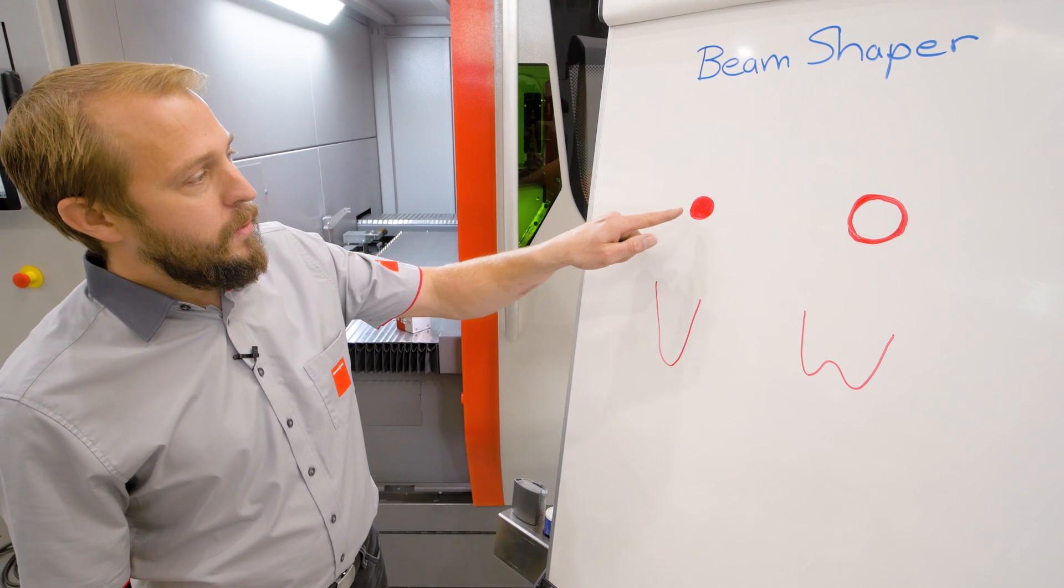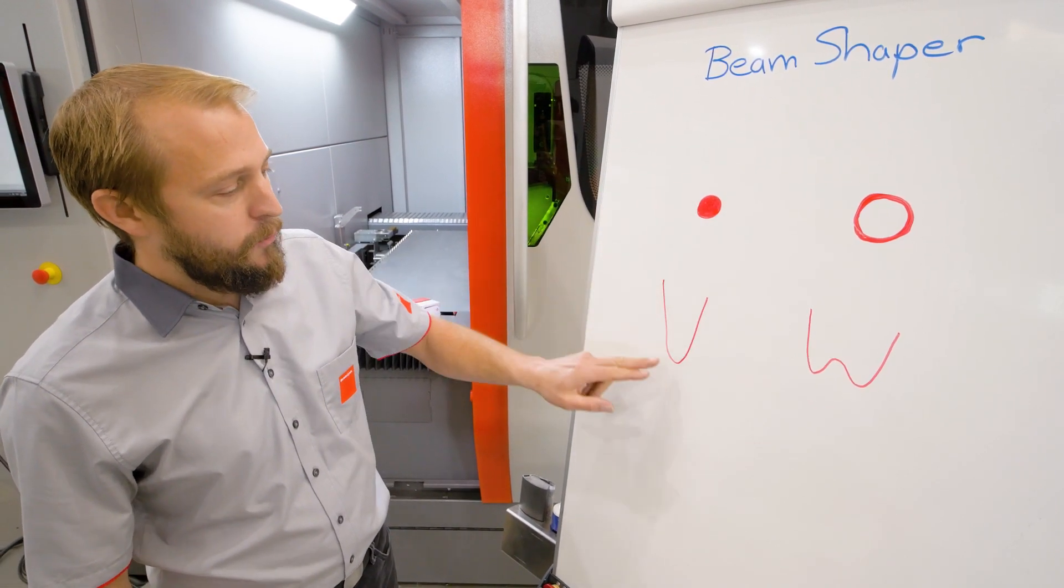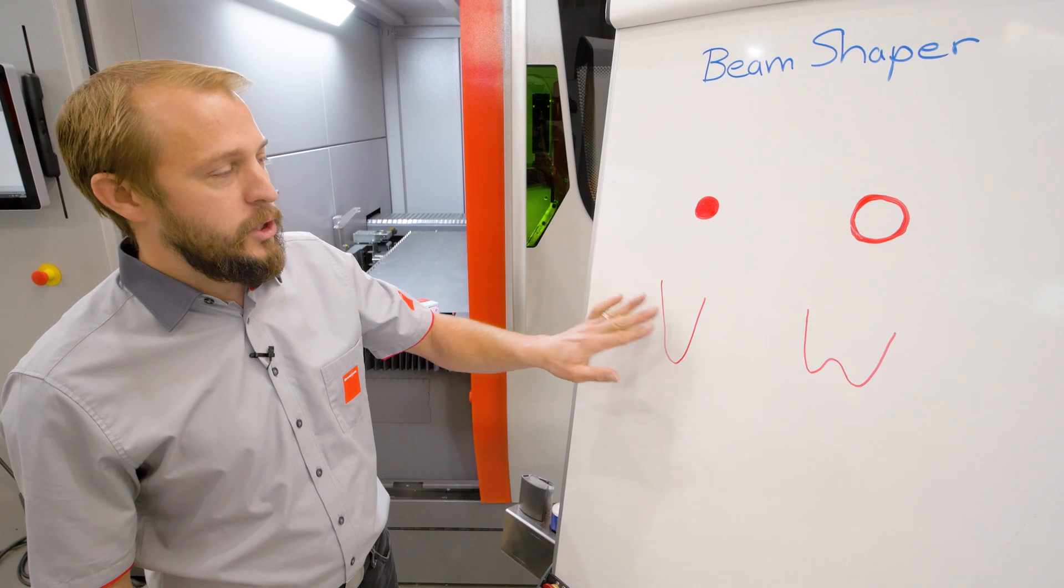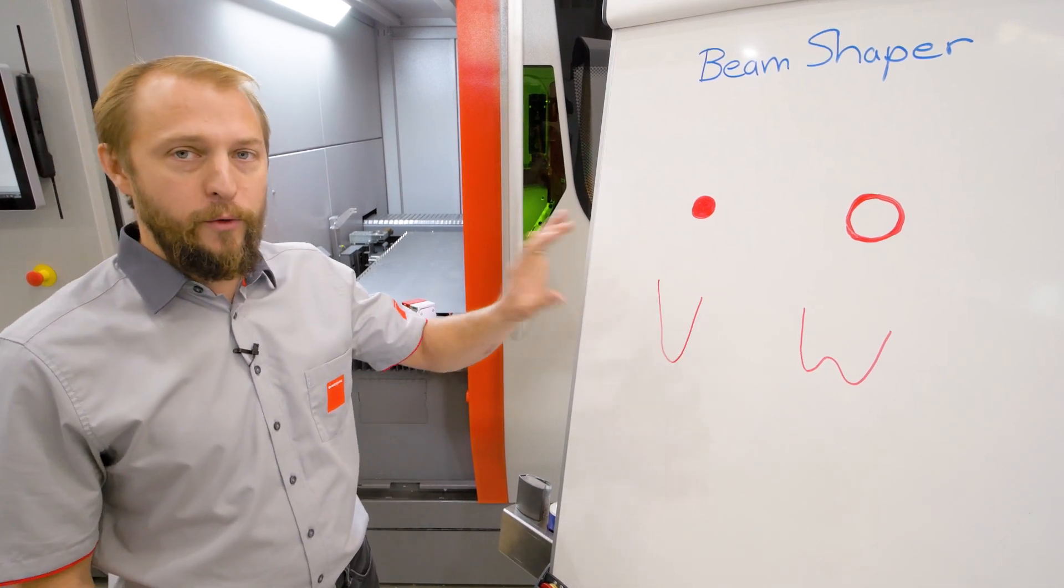Without beam shape, the entire energy will be on one spot. As you can see from the side, all the energy is here. That's perfect for fusion cutting.